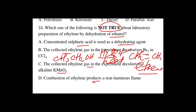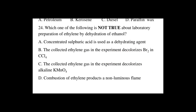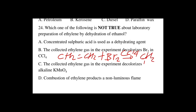Ethanol dehydrates in concentrated sulfuric acid to produce ethylene. Option A: concentrated sulfuric acid is used as a dehydrating agent — correct. Option B: ethylene decolorizes bromine in carbon tetrachloride. The reaction is CH2=CH2 + Br2 (in CCl4) → CH2Br–CH2Br.